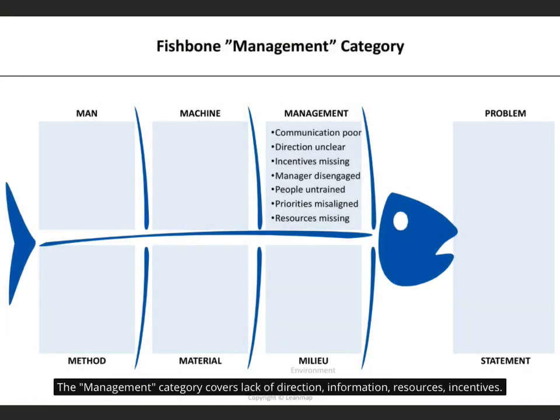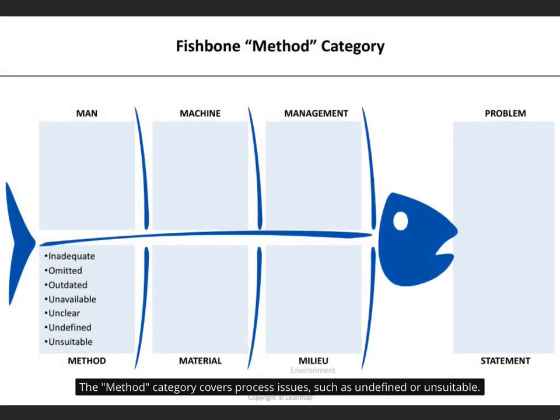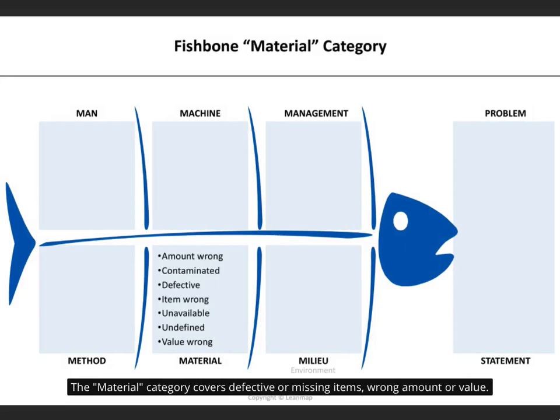The management category covers lack of direction, information, resources, and incentives. The method category covers process issues, such as undefined or unsuitable. The material category covers defective or missing items, wrong amount or value.